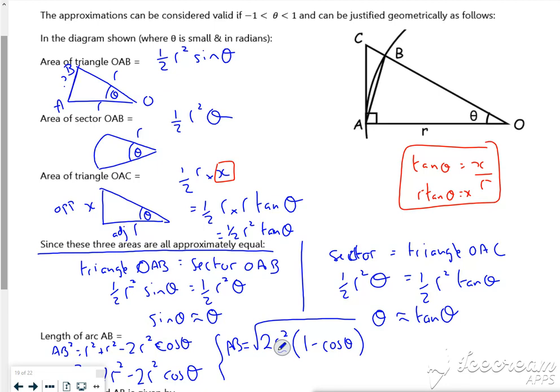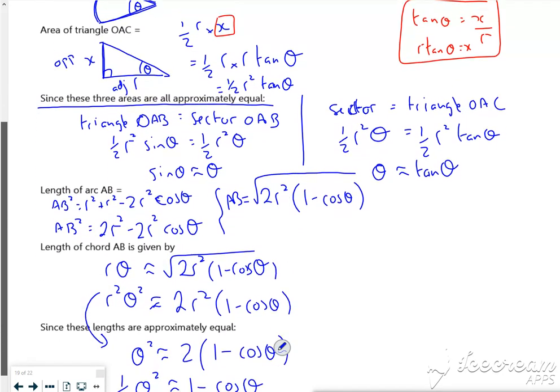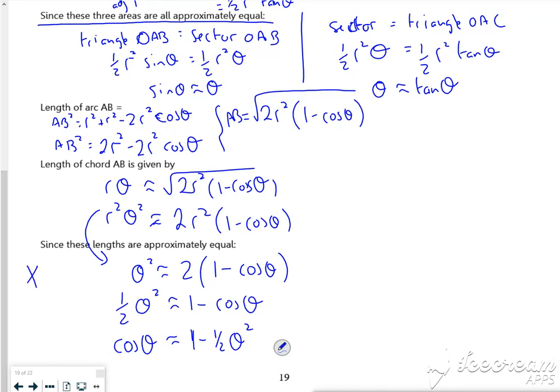So I'm using the triangle OAB, the sector OAB, and the right angle triangle OAC. I'm also using the fact that because it's small, the length of the chord is the same as the length of the long edge of the triangle, the edge AB.